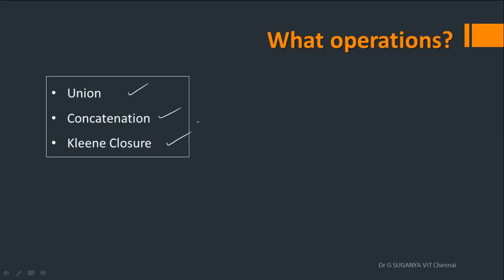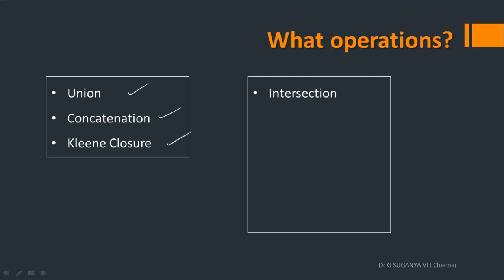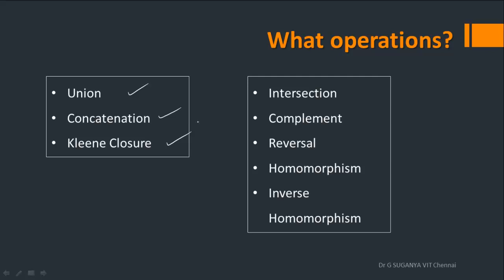These are the basic operations we can do with regular languages and also set theory. Extending this, there are other operations: the intersection of two languages gives you the common words in both languages, followed by the complement of a language — all words in the universal set that are not in that language. Then reversal — if AB is a string, BA will be its reversal. You also have homomorphism, the replacement of one symbol for another, and inverse homomorphism, the reverse of that.